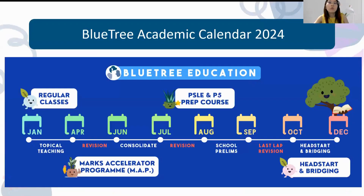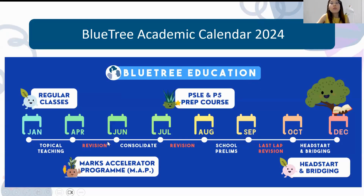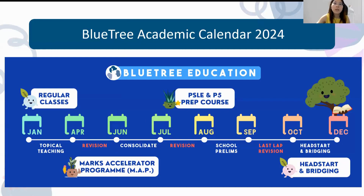This is our Blue Tree academic calendar. For P6 students, we're currently in March. After that comes April, then revision in June where you consolidate everything you've learned. At Blue Tree, we're already starting on practice papers while still covering new topics, and we always provide a revision paper so we can start revising with students as well.